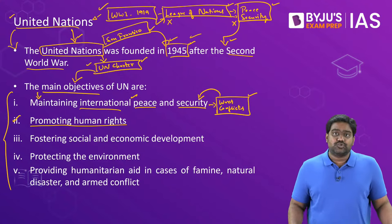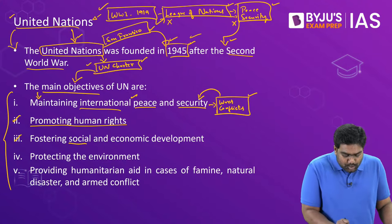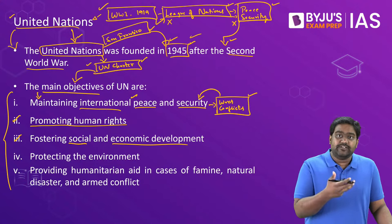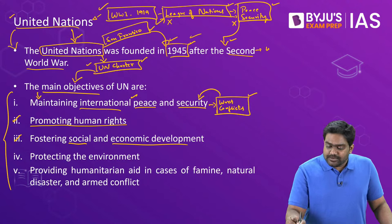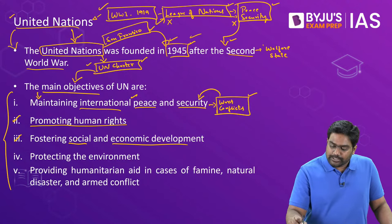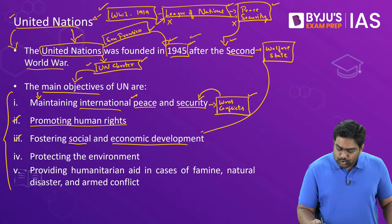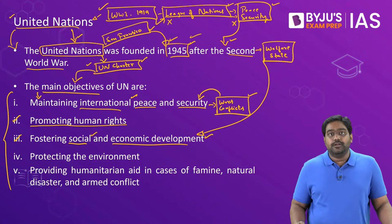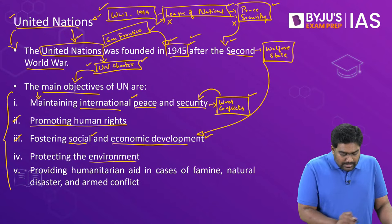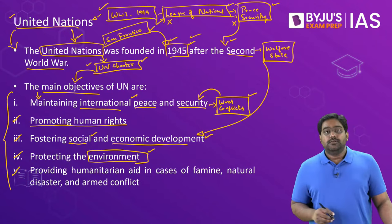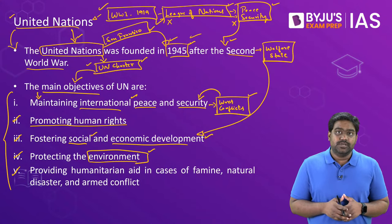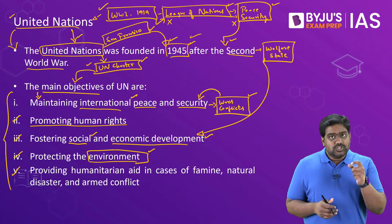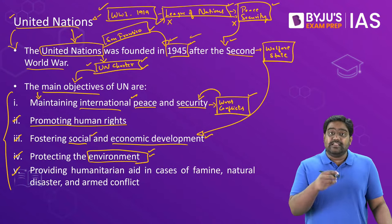The UN was also given the task to promote human rights and foster socio-economic development. Following the Second World War, there was focus on reconstruction and development. Many countries, especially European countries, started following the welfare state model, giving priority to socio-economic welfare programs. The idea was to rebuild the economies ravaged and destroyed by the world wars. UN was given this mandate to foster socio-economic growth around the world. There was also focus on protecting the environment — for the first time at the global level, environmental issues were being recognized, because the Industrial Revolution and the world wars had caused significant damage to our environment and biodiversity.